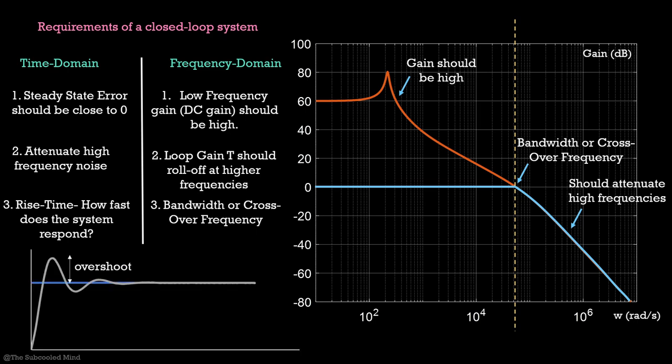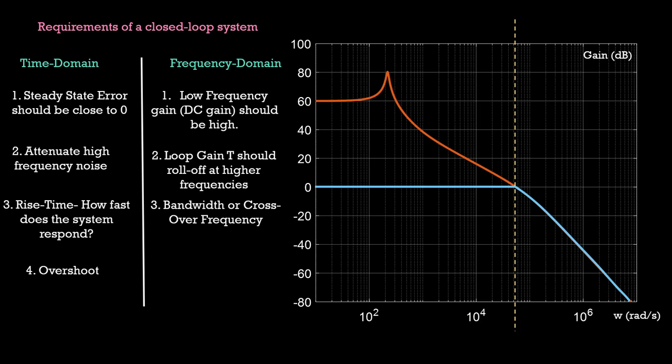There is one more requirement, overshoot of the system. The system should not overshoot too much or maybe none at all. Unfortunately, there is no direct parameter in the frequency domain that governs overshoot. It depends on how stable the system is. This also leads to our next topic, stability of the system. This is a very important topic in control theory. Let us see why stability is important.